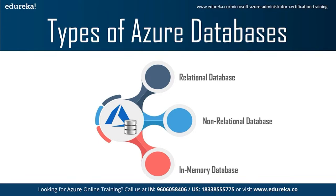In a relational database, each row in the table is a record with a unique ID called the key. The columns hold attributes of the data, and each record usually has a value for each attribute, making it easy to establish relationships among data points. All data is stored and accessed via relations — those that store data are called base relations or tables. Other relations computed by applying relational operations are called derived relations, implemented as views or queries. Each table has a primary key that uniquely specifies a tuple within a table.